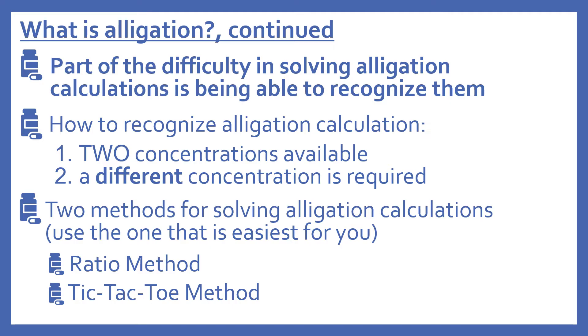There are two methods for solving allegation calculations. I'll be covering both of these — use the one that's easiest for you. There's the ratio method and the tic-tac-toe method.